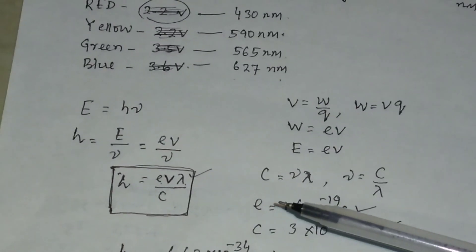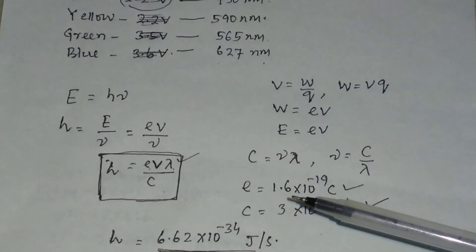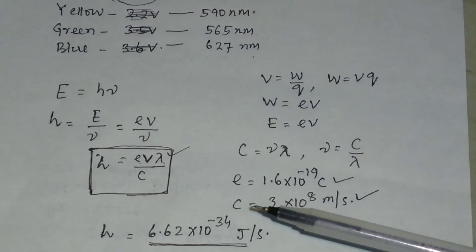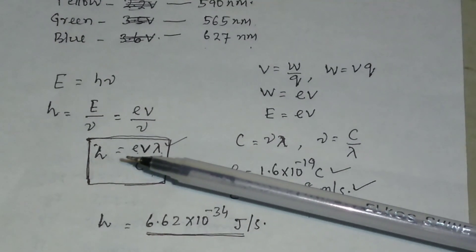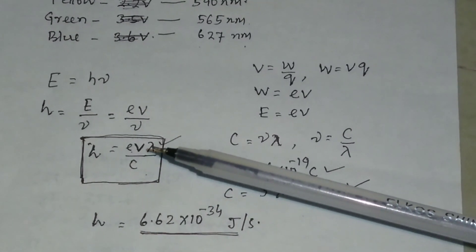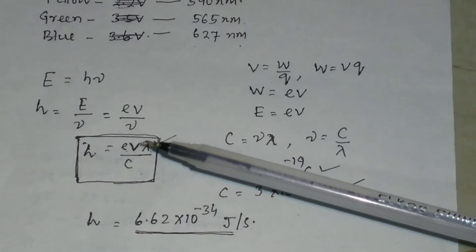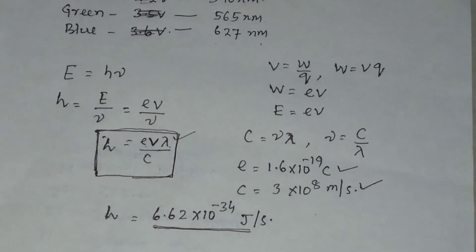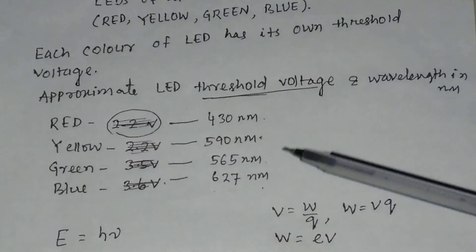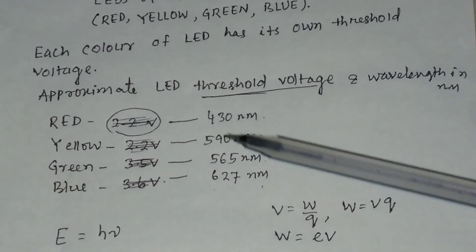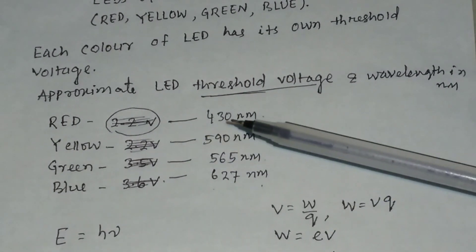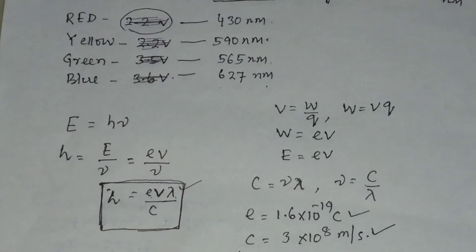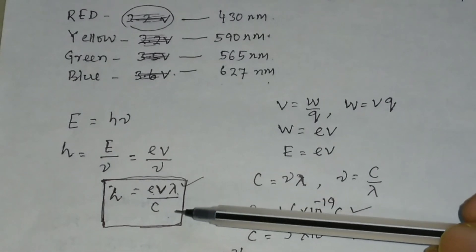We know E equals the charge of the electron times the potential, where the potential is called the threshold voltage. So h will be equal to eV divided by (c divided by λ), giving h = eVλ/c. The charge of the electron and the velocity of light are known values, and the wavelength λ of various LED colors are also known values given in nanometers.